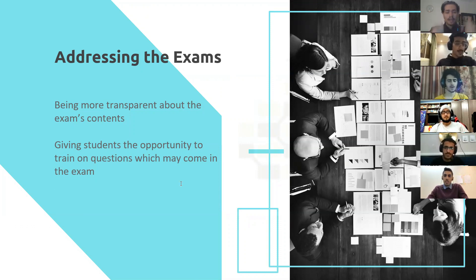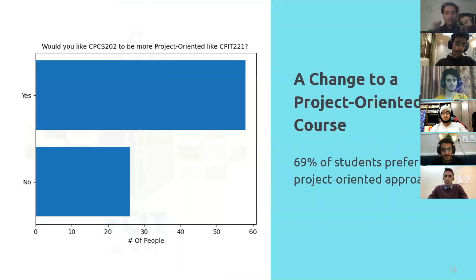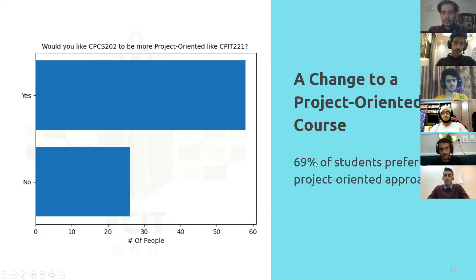Are exams the ideal way of measuring student performance? That brings us to our long-term vision for the course. Our main point is that we want to change it to a project-oriented course. As we can see in the graphs here, around 70% of the students prefer a project-oriented approach.